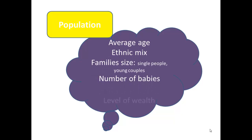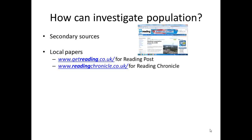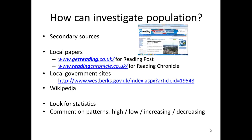Population is all about people and particularly about what you can measure about people. Geographers have noticed that certain areas have certain population characteristics — for example, Calcott may have lots of young families while Pangborn may have lots of older couples with older children. Population data will come from secondary sources. Often changes in population are reported in the news, so look in the local papers. Local governments need population stats and often publish them on their websites — look at the West Berkshire site for local statistics. Wikipedia often has a population section on different areas that it calls demography. Remember you are looking for statistics and should comment on patterns using words like high, low, increasing and decreasing.